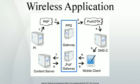Wireless Application Protocol is a technical standard for accessing information over a mobile wireless network. A WAP browser is a web browser for mobile devices such as mobile phones that uses the protocol. Before the introduction of WAP, mobile service providers had limited opportunities to offer interactive data services, but needed interactivity to support Internet and web application services such as email by mobile phone,